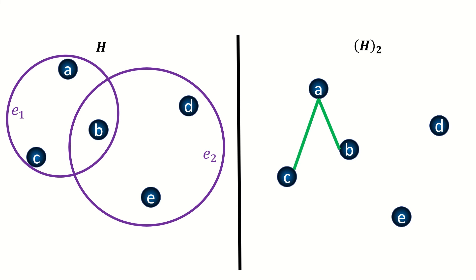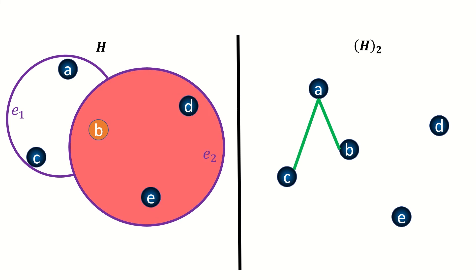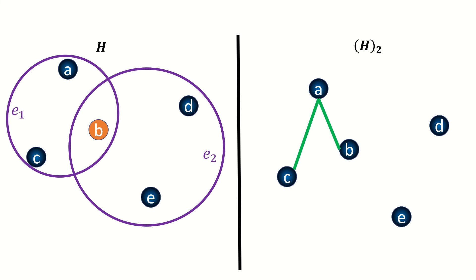In the hypergraph, vertex b shares an incident edge e_1 with vertices a and c, and shares an incident edge e_2 with vertices d and e. So in the two section, vertex b will be adjacent to vertices a, c, d, and e.